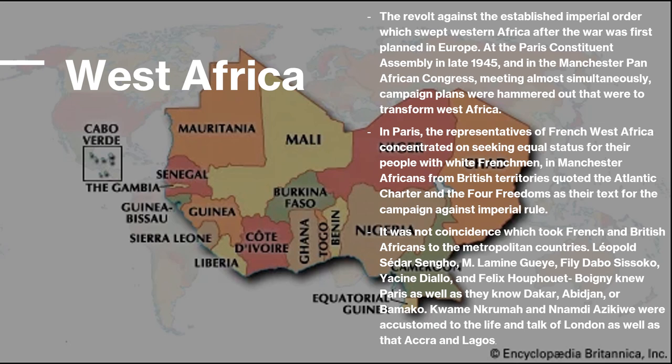It was no coincidence which took French and British Africans to the metropolitan countries. These were political leaders and writers. Félix Houphouët-Boigny was the former president of the Ivory Coast. Léopold Sédar Senghor was the Senegalese poet, politician, and cultural theorist who was the first president of Senegal. Kwame Nkrumah and Nnamdi Azikiwe were accustomed to the life and talk of London as well as that of Accra and Lagos.